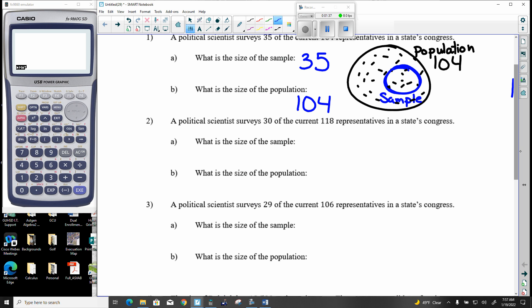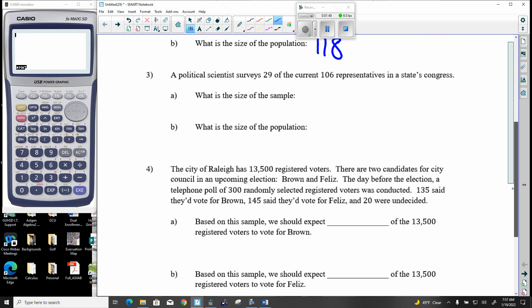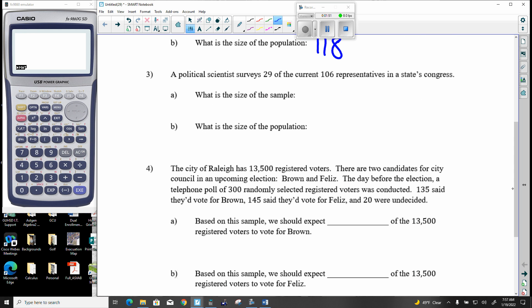So population is everybody, sample is what you're looking at. A political scientist surveys 30 out of the 118. So 30, 118. Pretty straightforward. Asks 29 of the current 106. So 29, 106. Very simple.